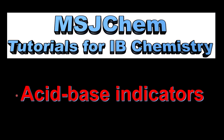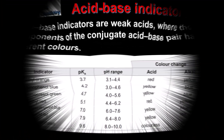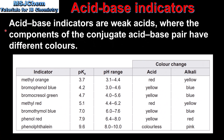This is MSJChem. In this video I'll be looking at Acid Base Indicators. Acid Base Indicators are weak acids where the components of the conjugate acid base pair have different colors. In this table we can see some examples of acid base indicators, which can be found in the Chemistry Data Booklet.